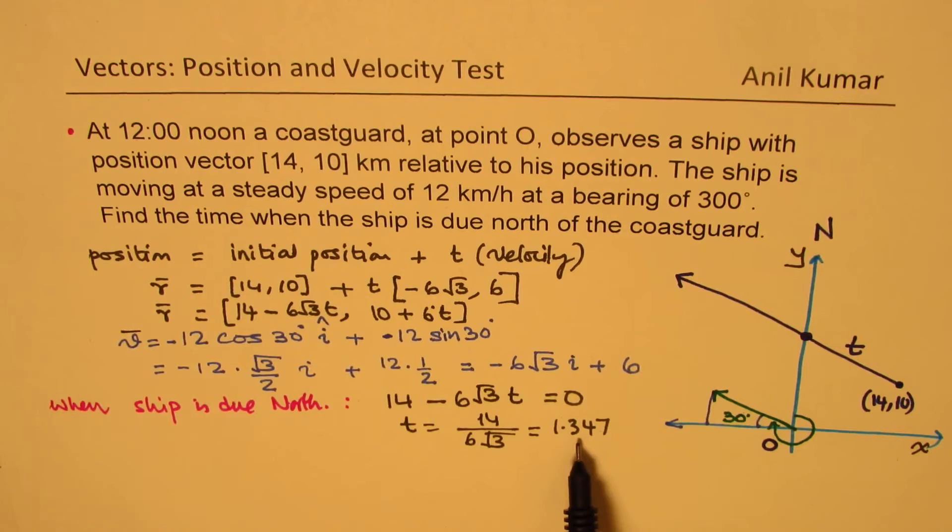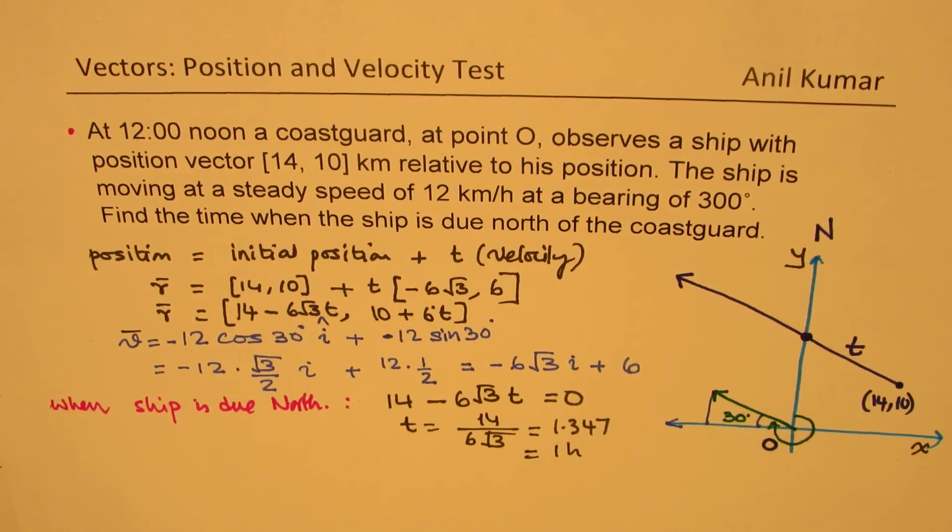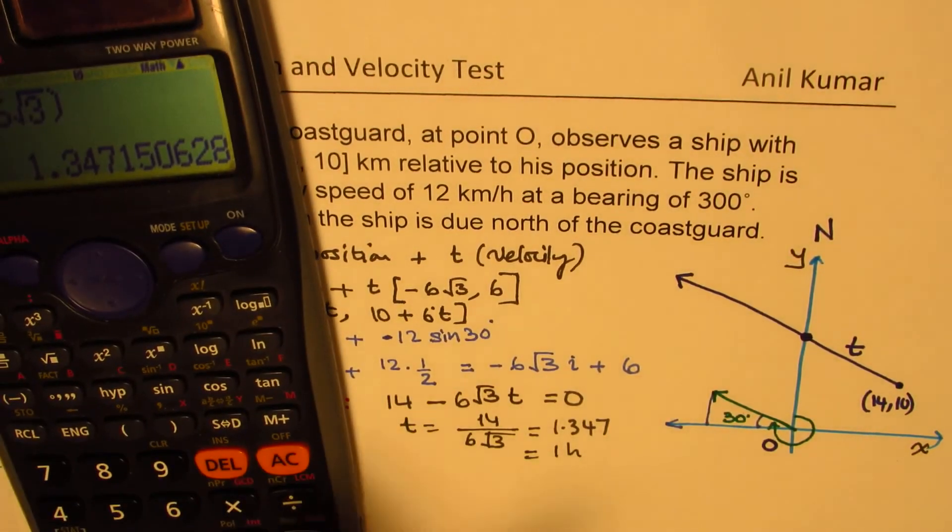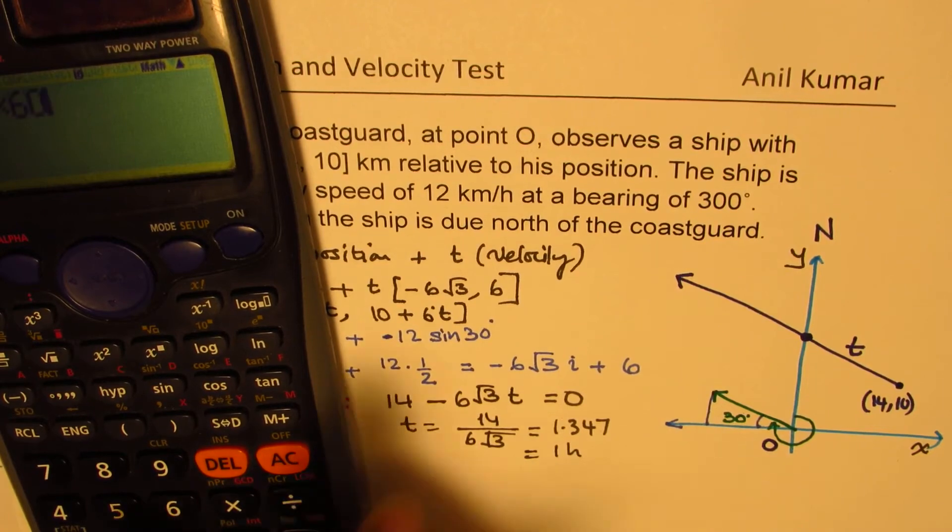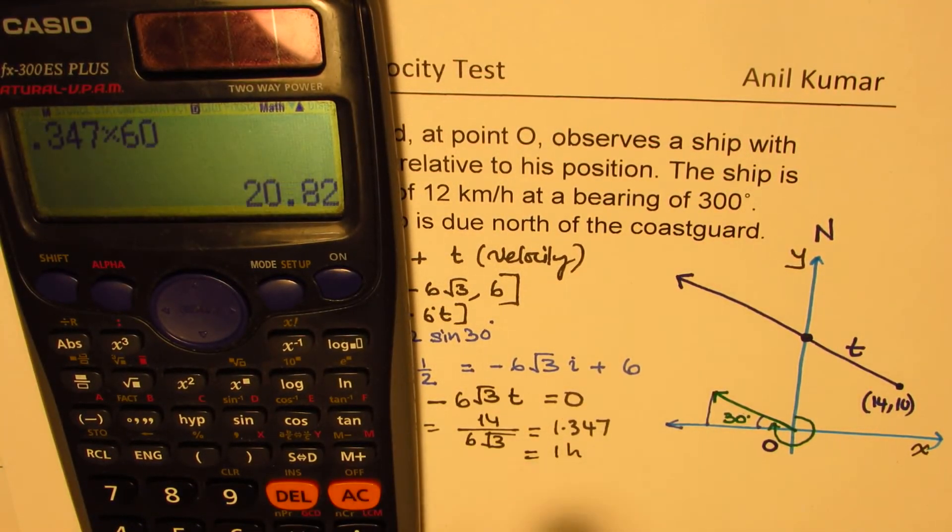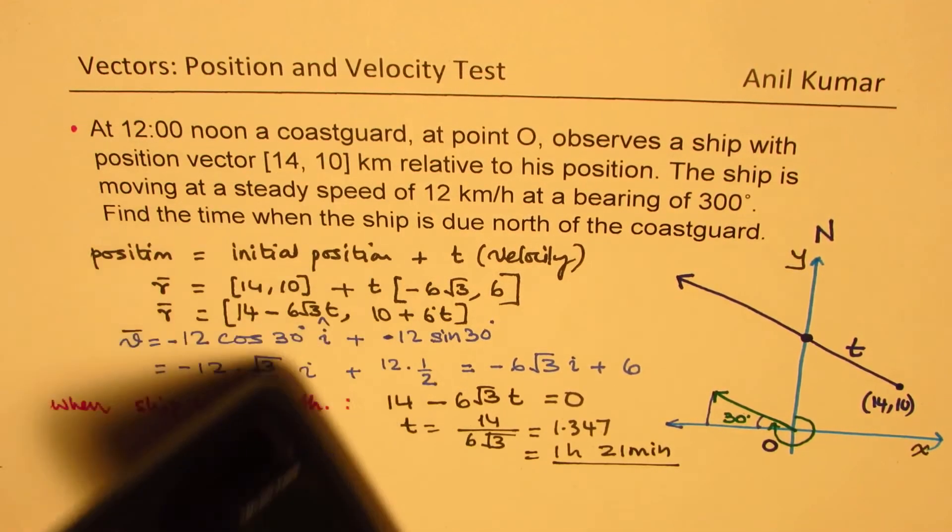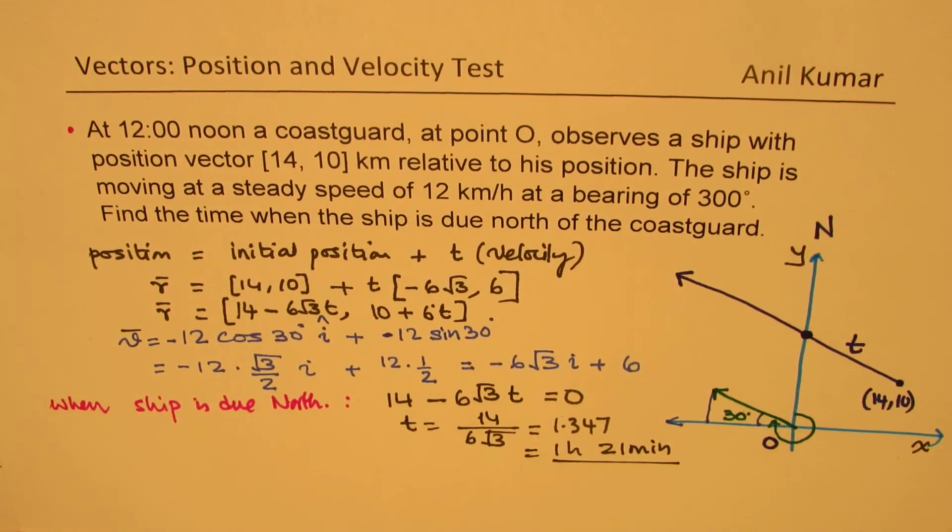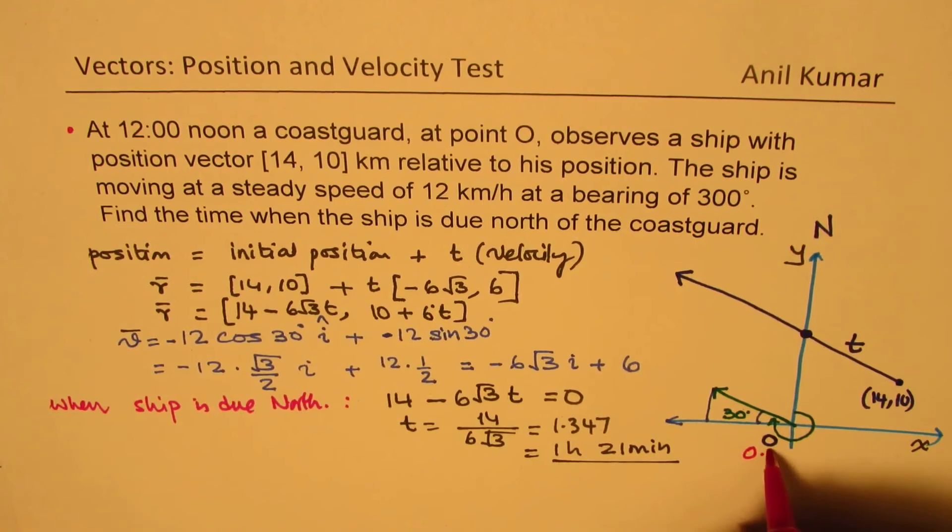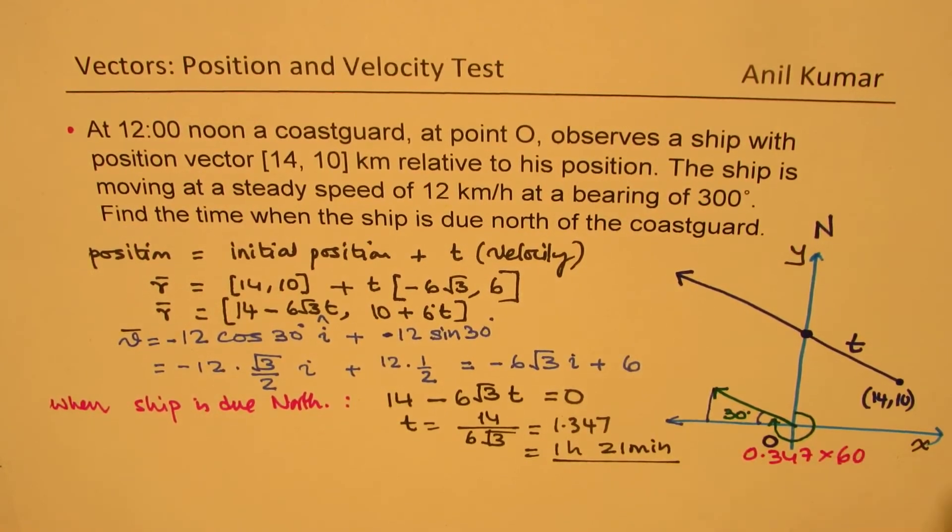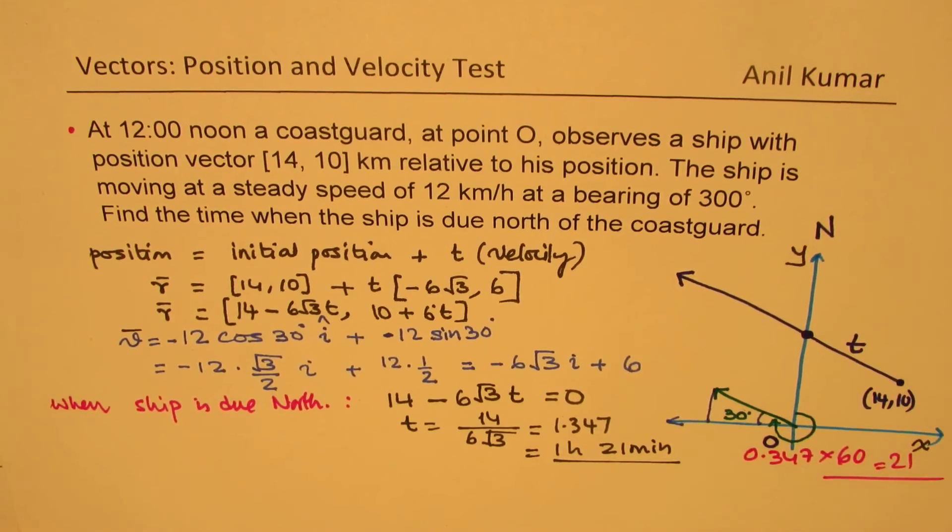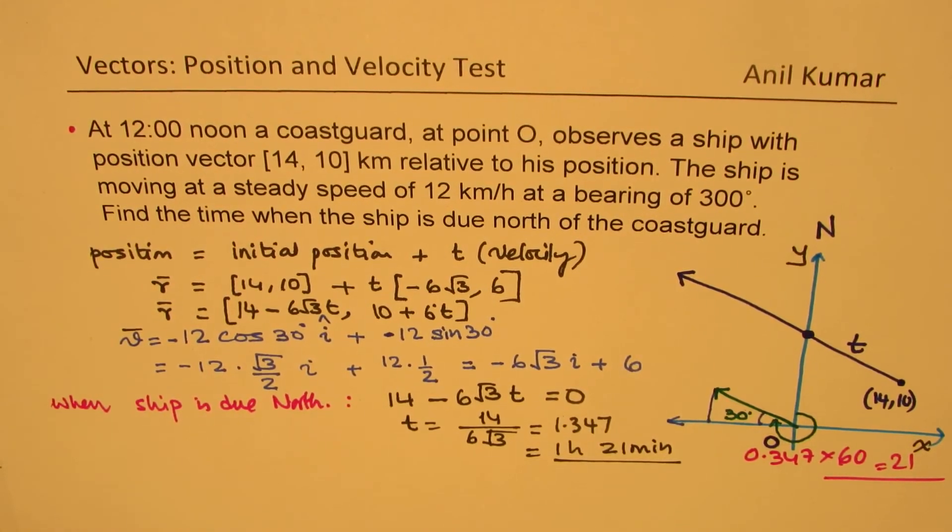So 1 hour and a half approximately. We can convert this. We have time equal to 1 hour, and 0.347 times 60 equals 21 minutes. So that is how we could solve this. We found 21 minutes by multiplying 0.347 by 60. That's how we solve this question.